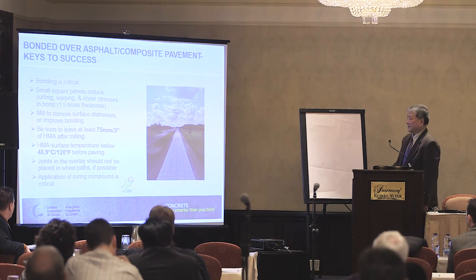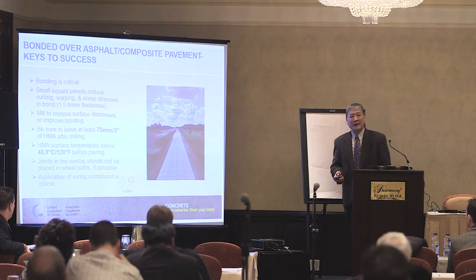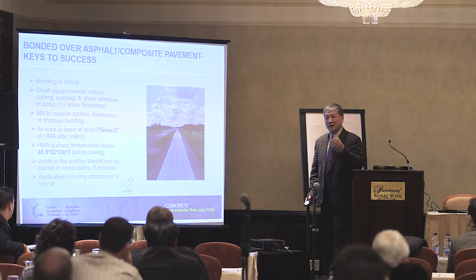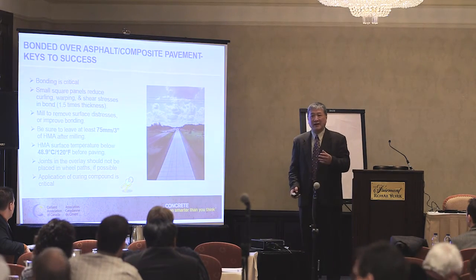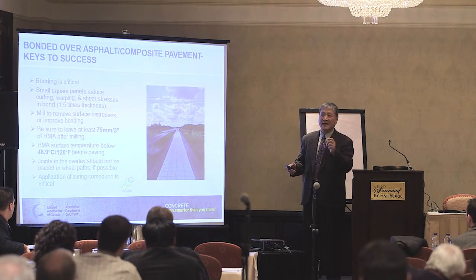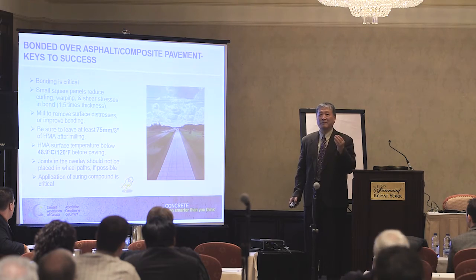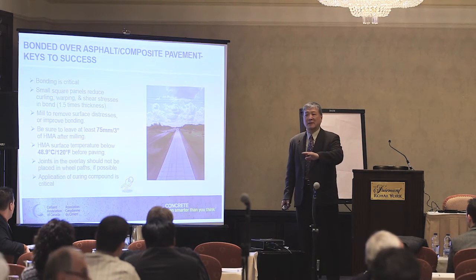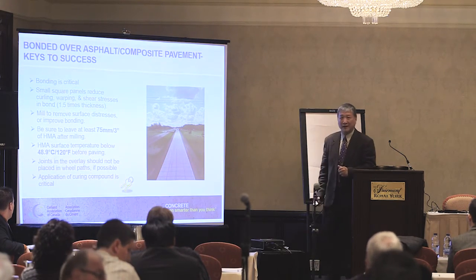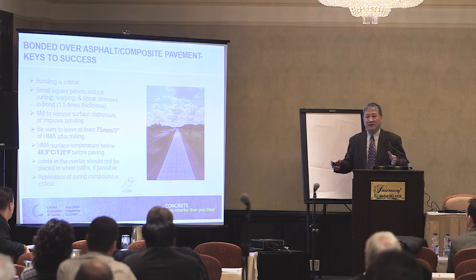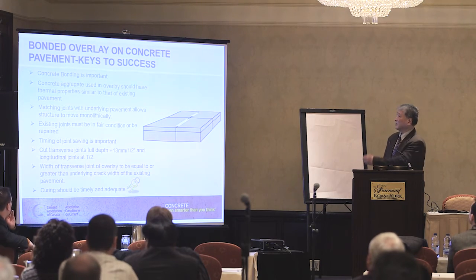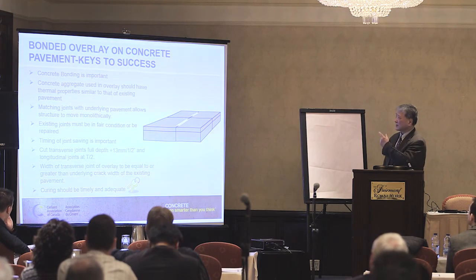In highway application, white-pigmented curing compound is typically sprayed on top of the concrete pavement. You also have to be careful to apply curing compound on the sides of the concrete pavement, because even if the top is protected, moisture can also evaporate from the sides and edges.